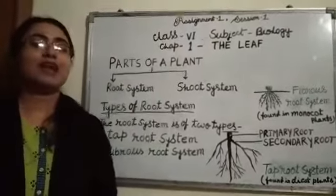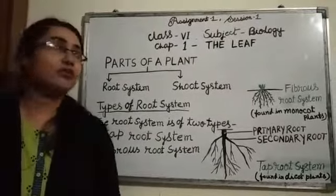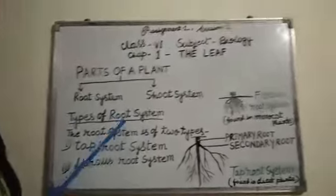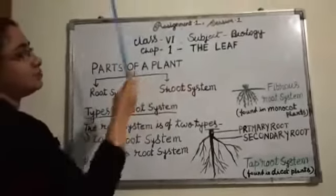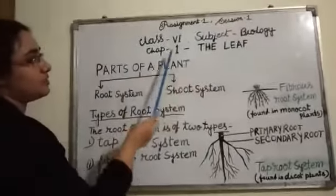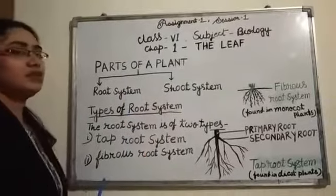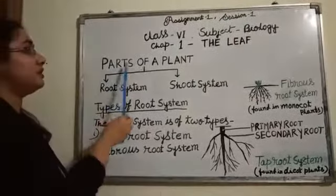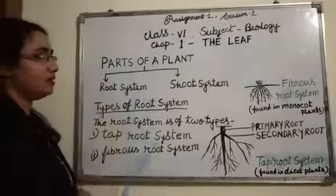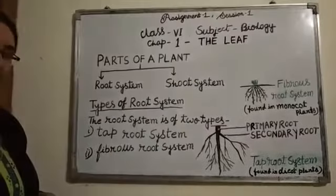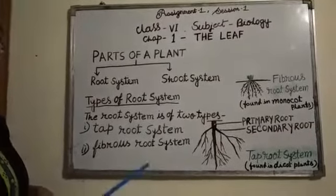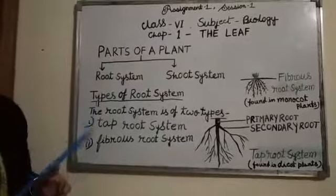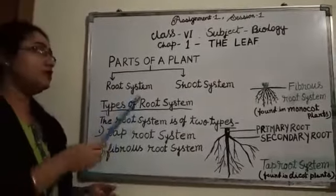Welcome students. I welcome you in class 6. Today we shall start biology assignment 1, chapter 1: the leaf. First we shall learn about the parts of a plant. After that we shall learn about the parts of a leaf. You already know about the parts of a plant.